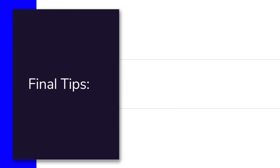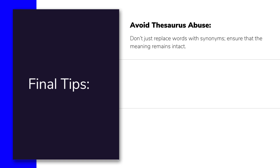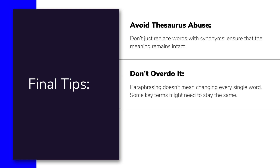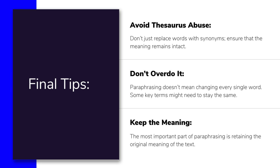Before we see some examples of paraphrasing, let's go over a few tips to make sure you're doing it effectively. First, avoid thesaurus abuse — don't just swap out words with random synonyms; make sure the new words fit the context and keep the meaning the same. Next, don't overdo it: paraphrasing doesn't mean changing every single word, as some key terms might need to stay as they are. And most importantly, keep the meaning intact. The goal is to retain the original message while putting it in your own words. By following these tips and practicing regularly, you'll get better at paraphrasing, a skill that's valuable in both academic and professional writing.